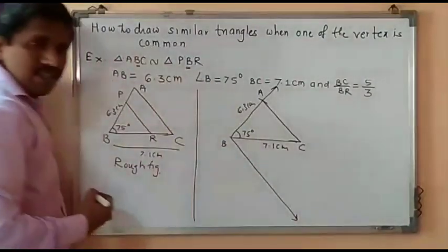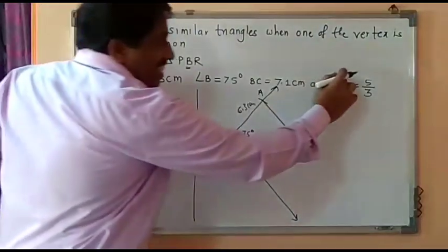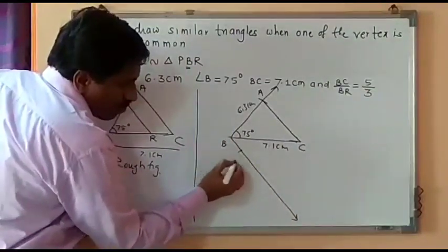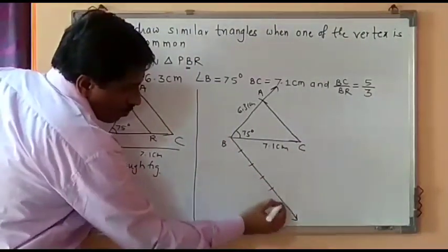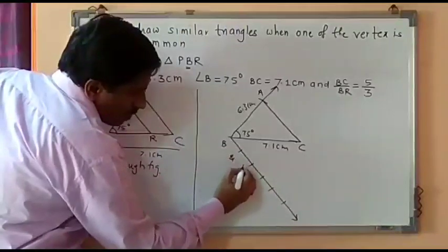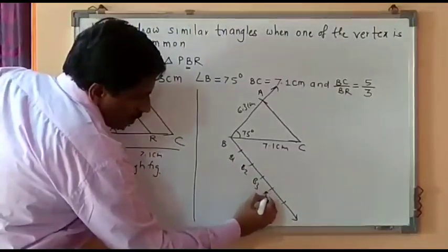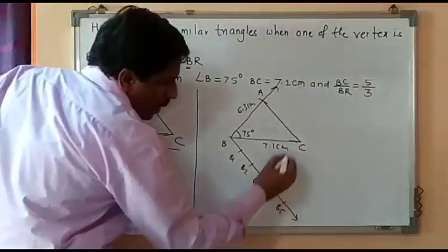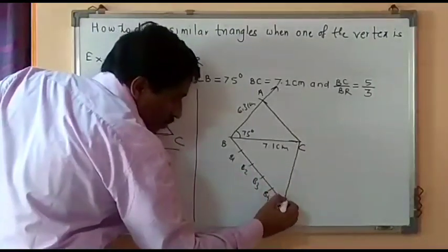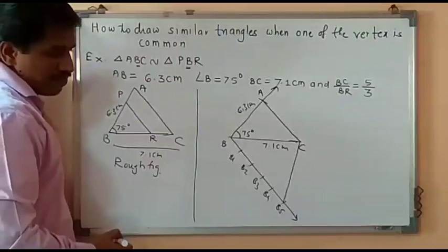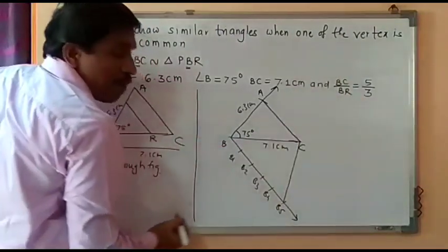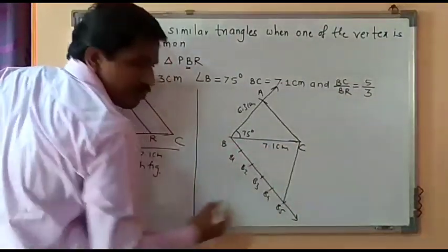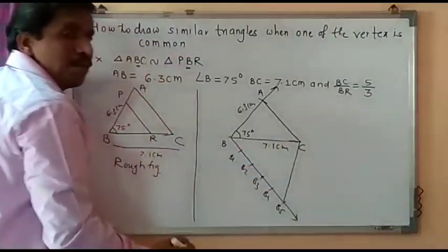Draw a ray at any angle. Since BC upon BR is 5 upon 3, divide this ray into 5 equal parts: B1, B2, B3, B4, B5. Since BC is a multiple of 5, we join B5 with C.